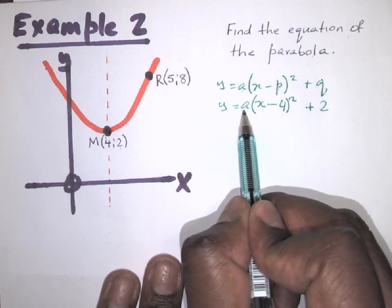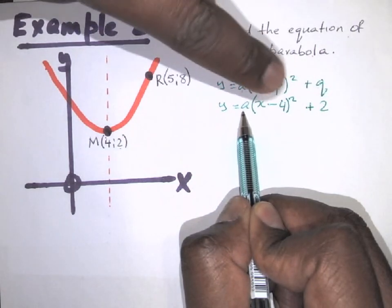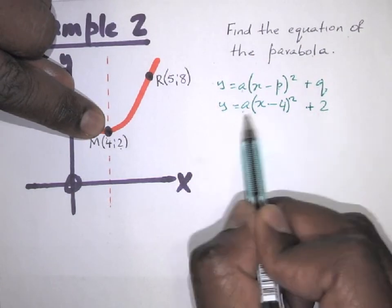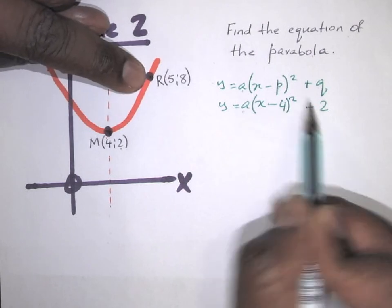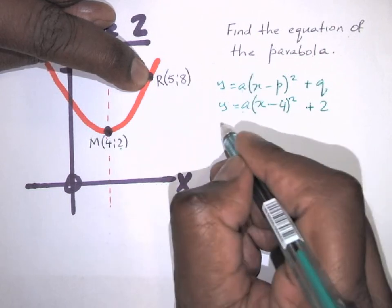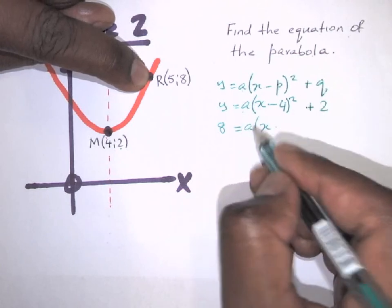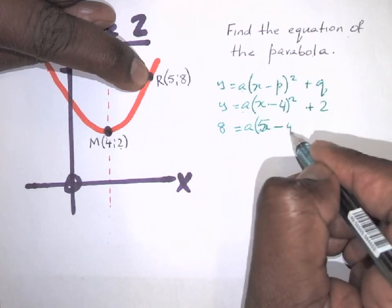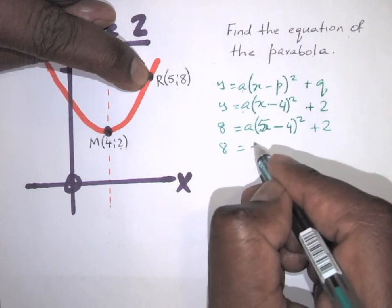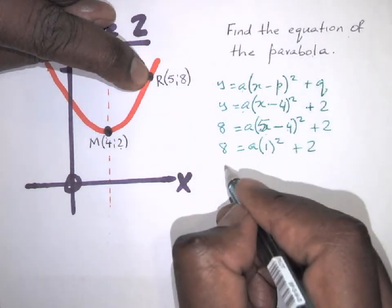Now we need to find the value of a. We use another point on the graph that we haven't used yet. That point has x = 5 and y = 8. Substituting into the equation: 8 = a(5 − 4)² + 2.